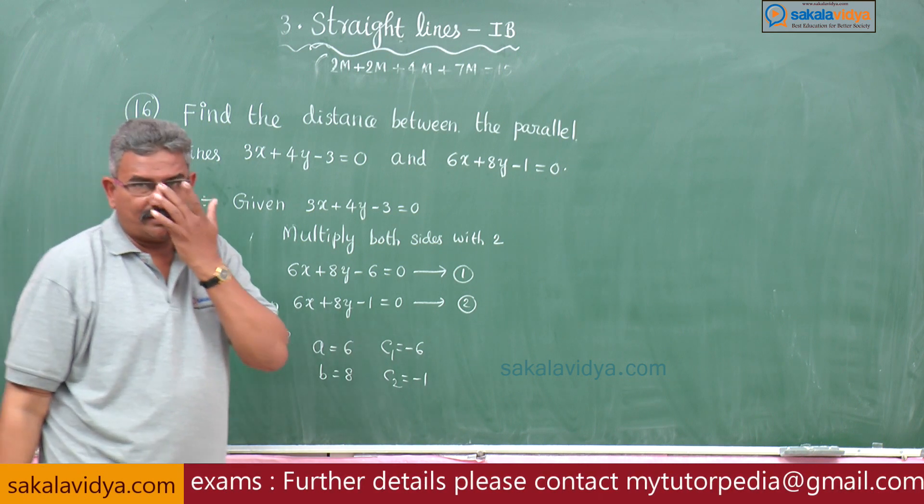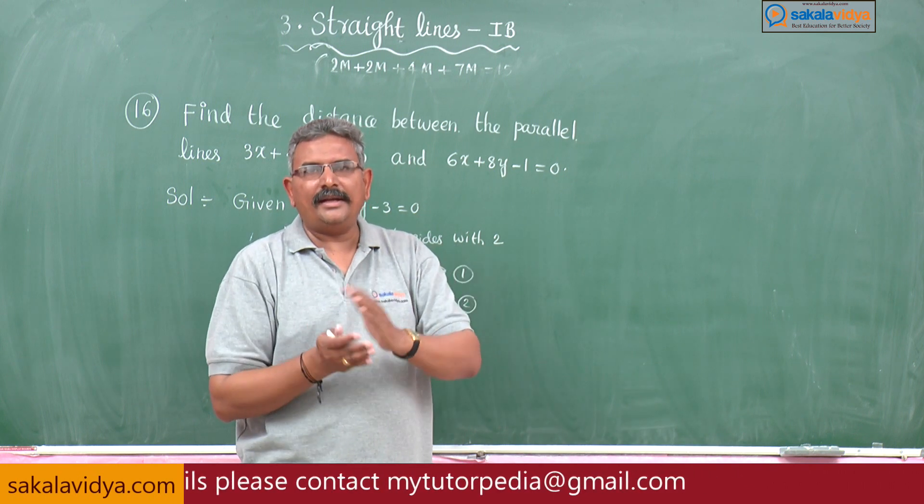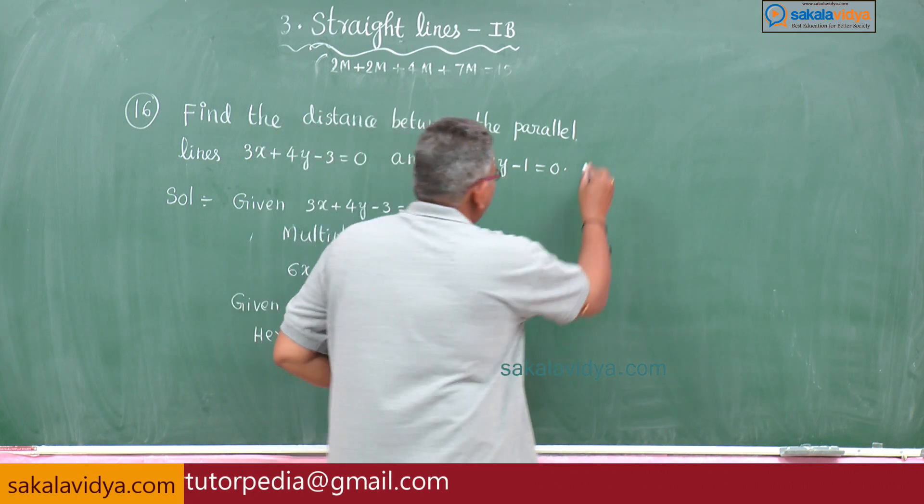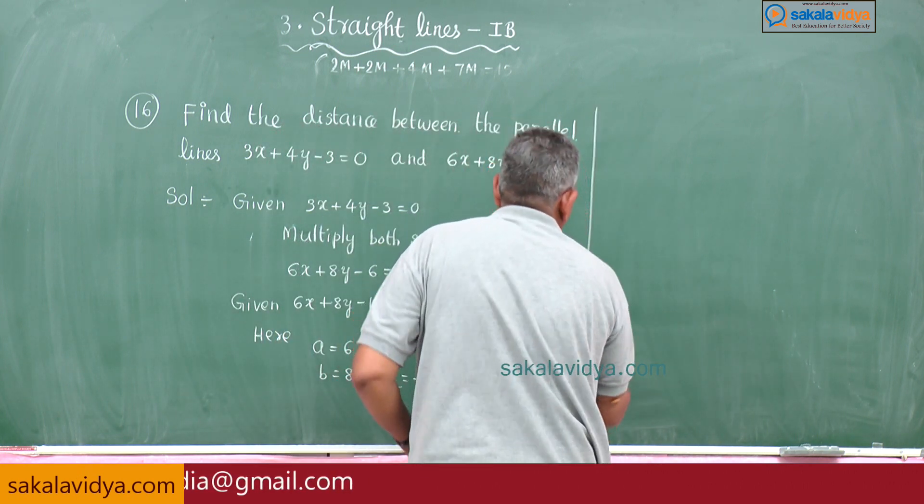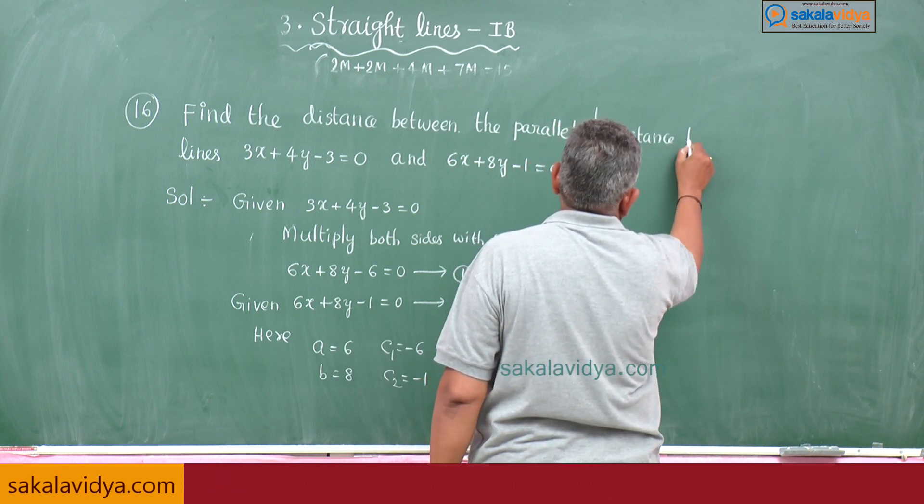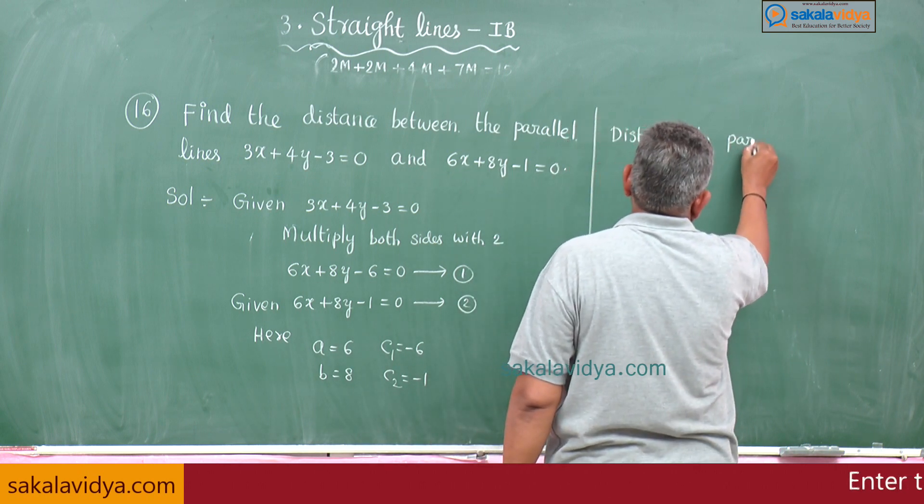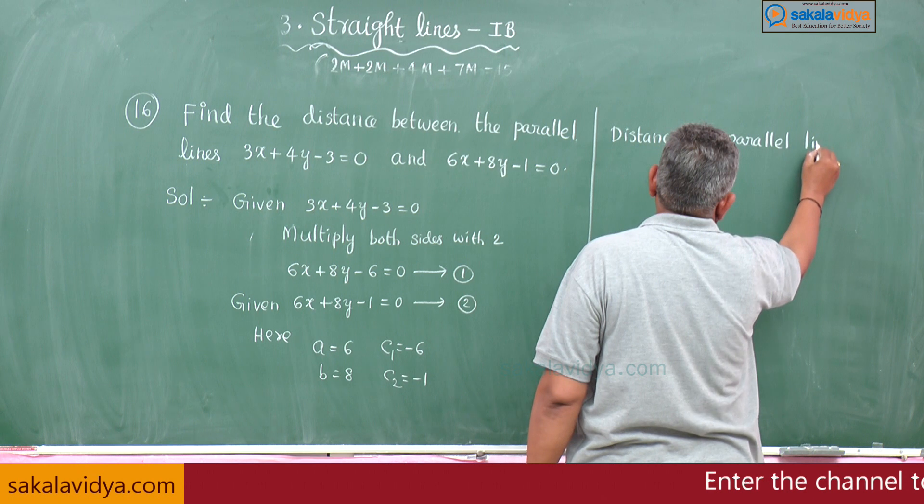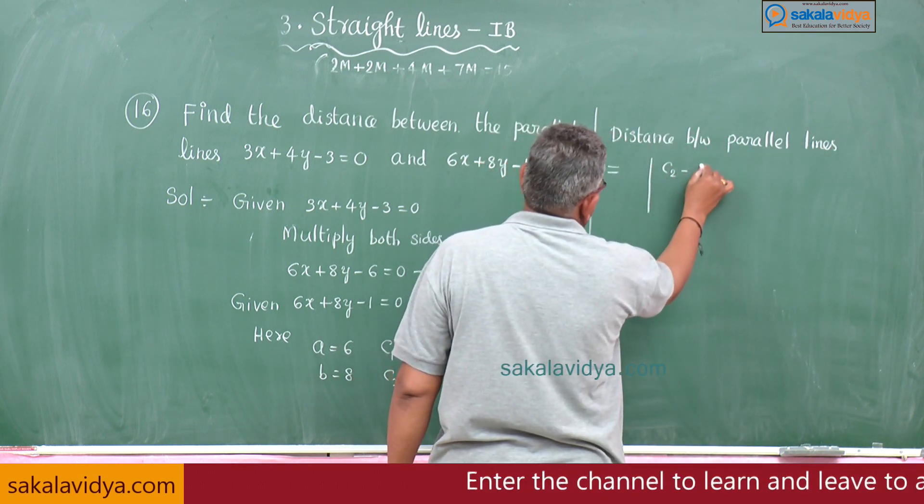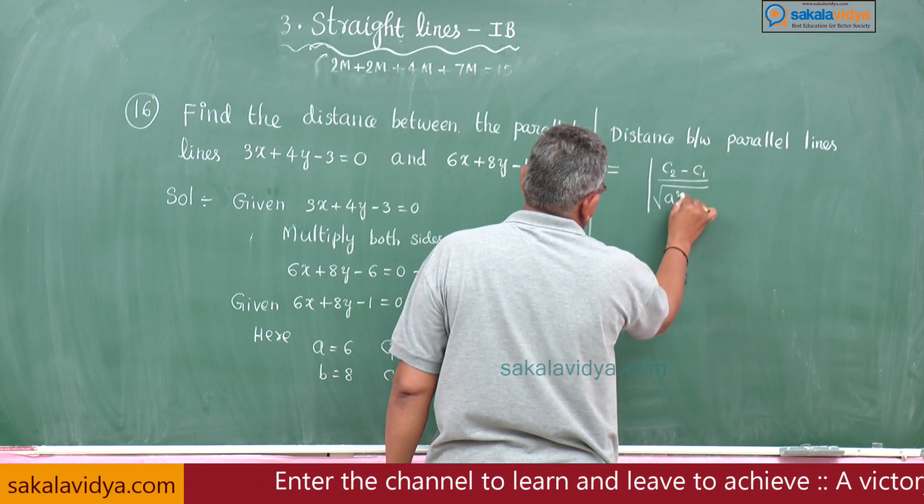The formula is very important. I already told you it is applicable for board examinations as well as entrance examinations, different multiple choice questions. Distance between parallel lines is given by modulus of c2 minus c1 by root of a square plus b square.